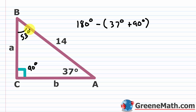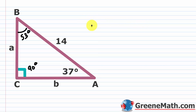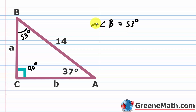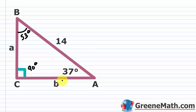You can write the measure of angle B as 53 degrees — whatever notation your teacher prefers. Now we want to find the missing sides. We have two unknown sides to solve for.